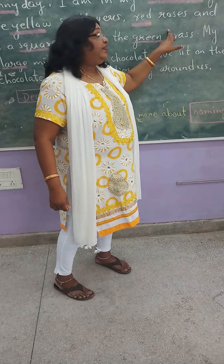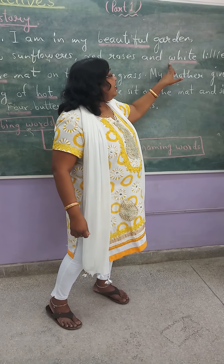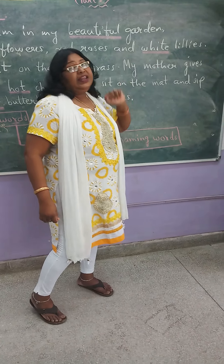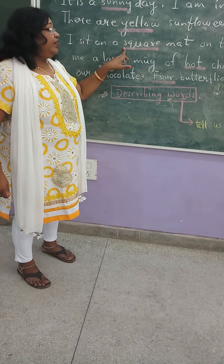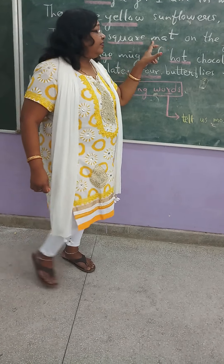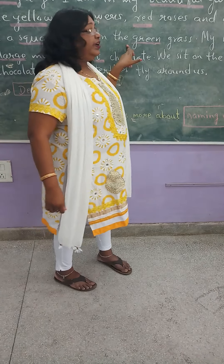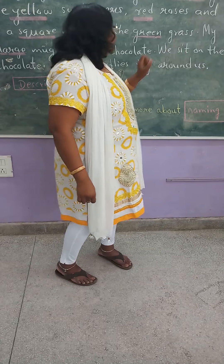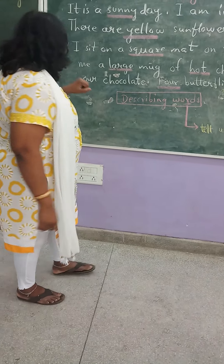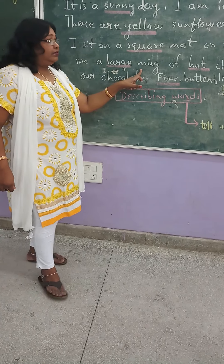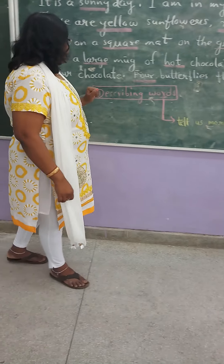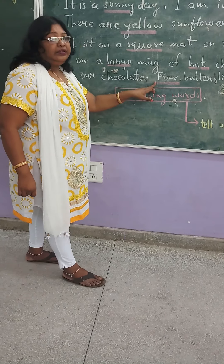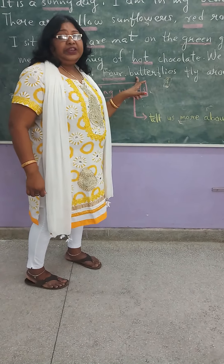In the same way, red color describes roses, and white color describes lilies. The word square describes mat. Green describes the color of grass. Hot describes the chocolate. And four, the number, describes how many butterflies.